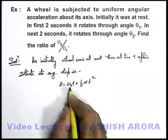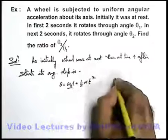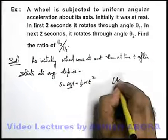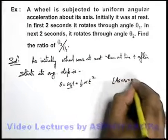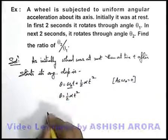Now, as the initial angular velocity was zero because the wheel was started from rest, omega knot equals zero, so we can write theta equals half alpha t square.